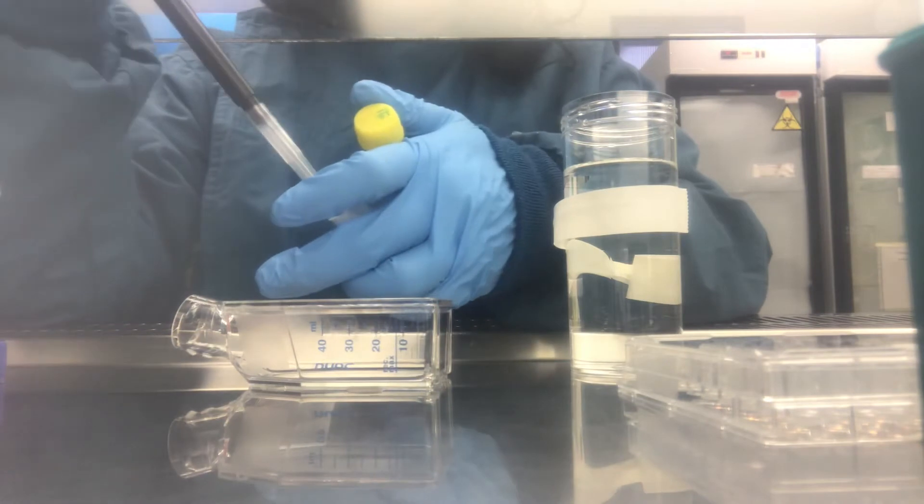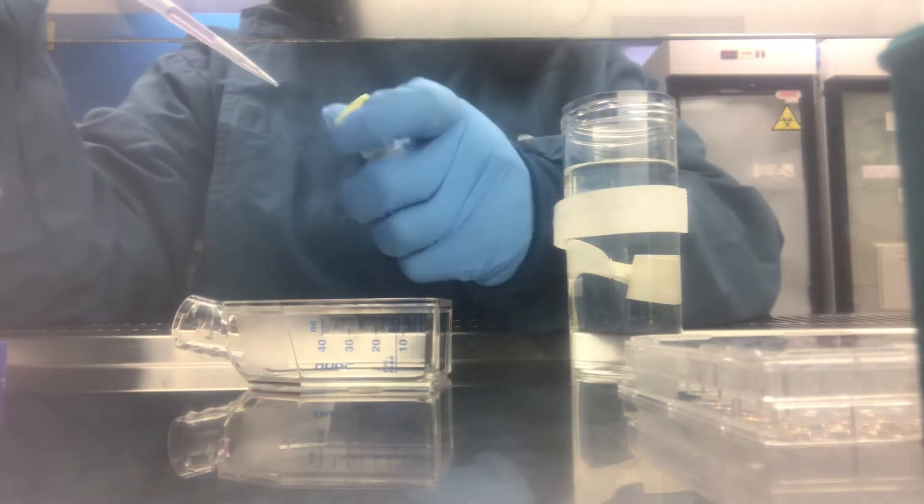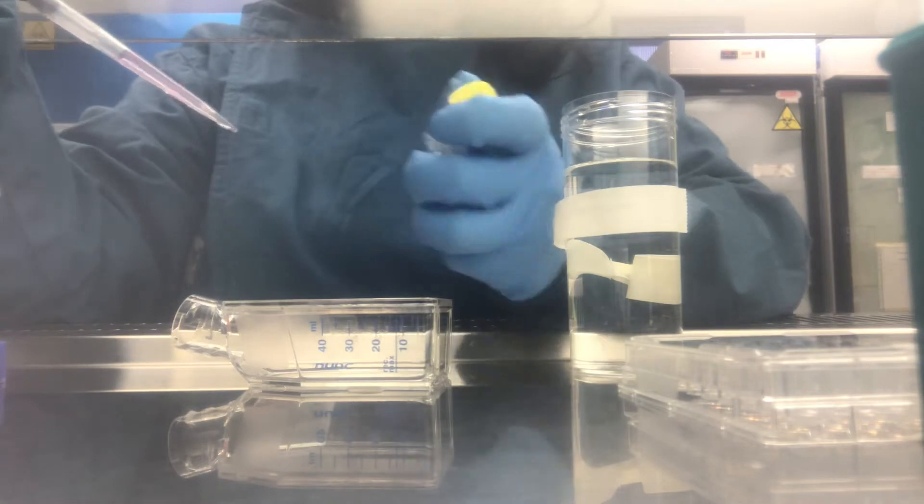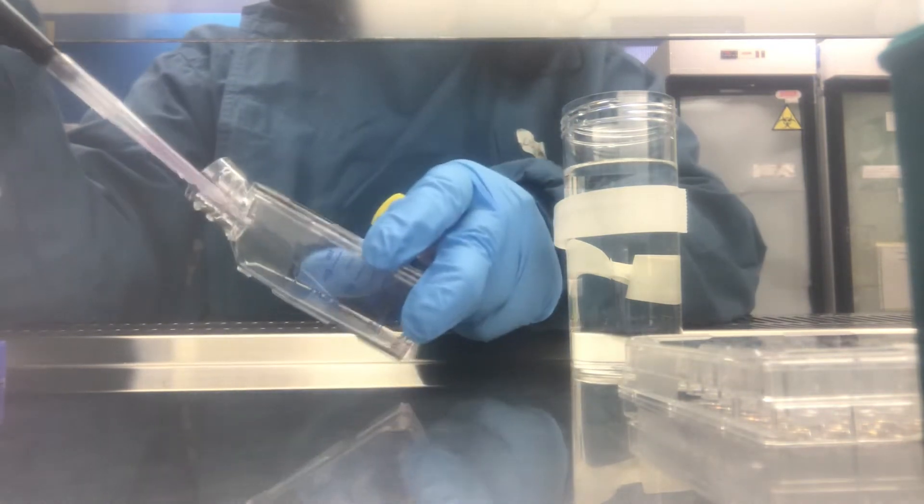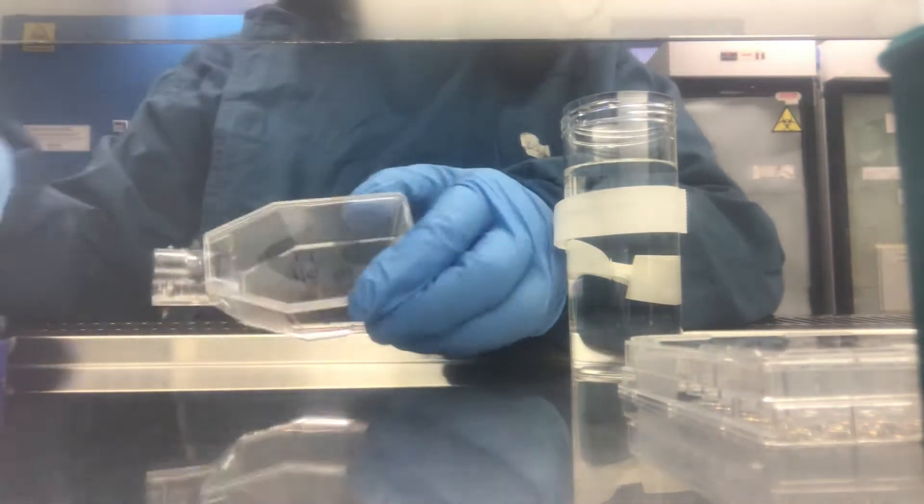Now you add trypsin. I'm adding 0.5 ml for this flask, which is a 25 centimeter cubed flask.